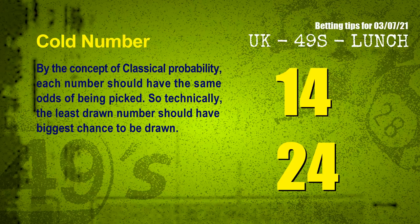We also have two more tips: cold numbers and overdue numbers. By the concept of classical probability, each number should have the same odds of being picked, so the least drawn number should have the biggest chance to be drawn. After counting thousands of results, the coldest two numbers for the next draw are 14 and 24.